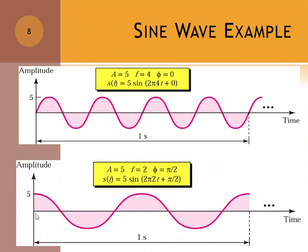What happens in the second one? This one, F equals two. Frequency equals two. What does it mean? Let's see how many times it completes one cycle. How many times does the signal complete a full cycle in one second?